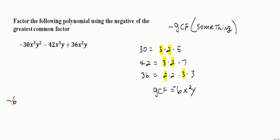So let's write that down here. Negative 6x squared y times something. And to get that something we're going to take each one of the terms of the original polynomial and divide it by negative 6x squared y. Divide it by whatever we've factored out here.